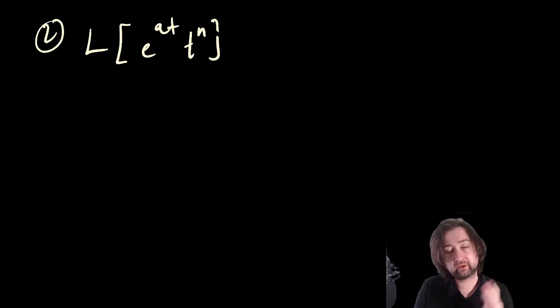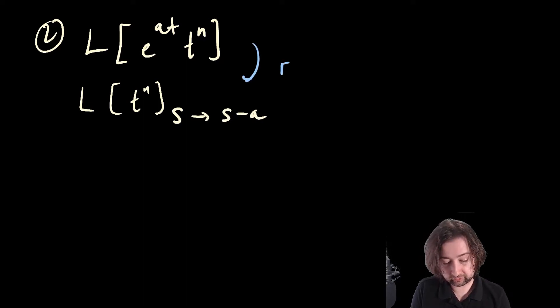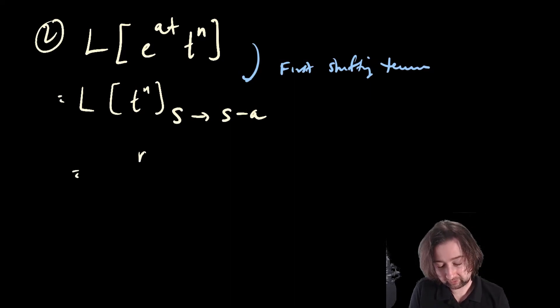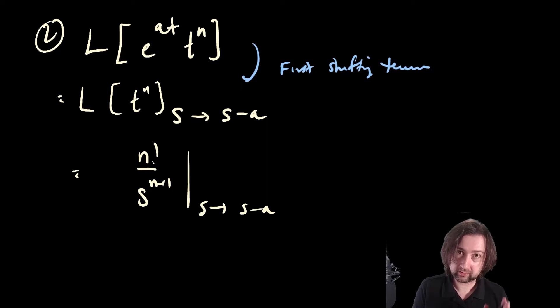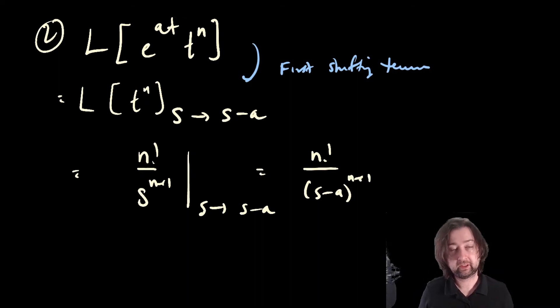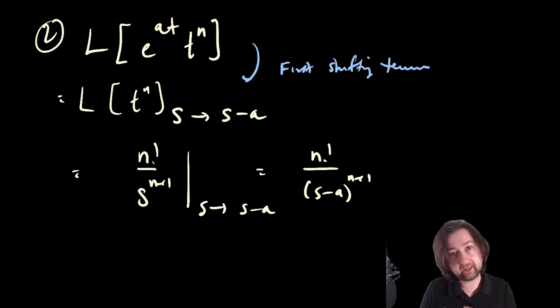For another example, the Laplace transform of e to the at times t to the n: the first shifting theorem says to take the Laplace transform of t to the n and then shift s into s minus a. The Laplace transform of t to the n is n factorial over s to the n plus 1, and replacing s with s minus a gives n factorial over (s minus a) to the n plus 1. The idea is that you store the fact that you're going to shift — which takes care of the exponential — do the Laplace transform normally, and then put the shift in at the end.